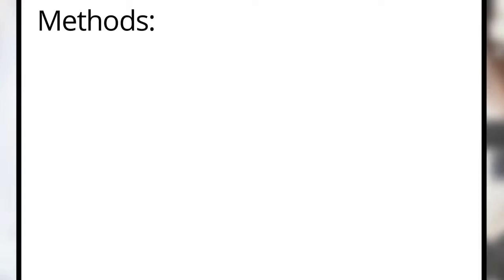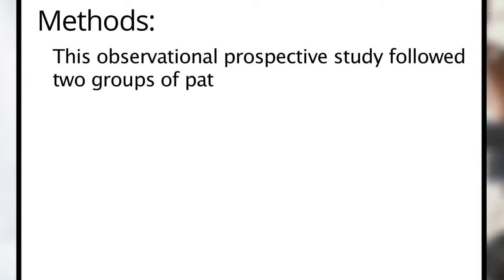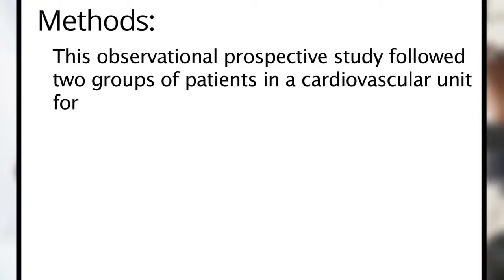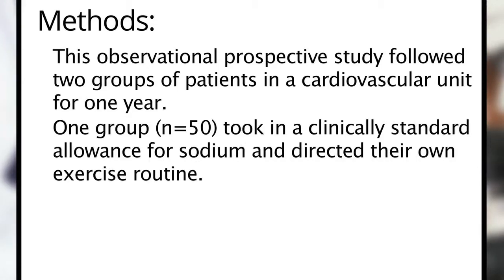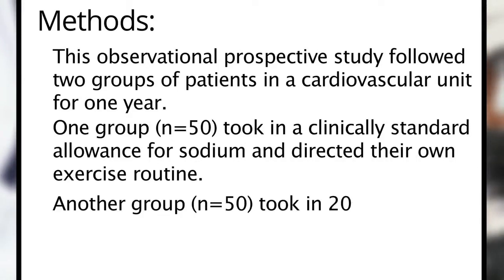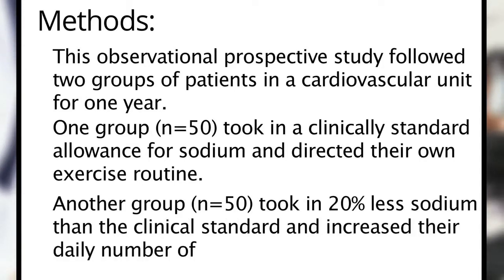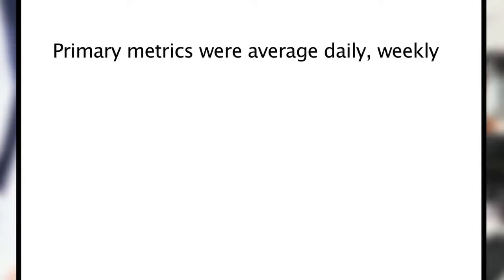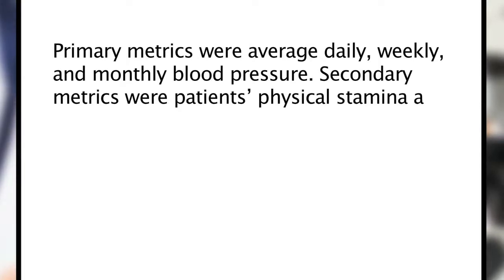Next, recall that the foundation of your methods section was the following. This observational prospective study followed two groups of patients in a cardiovascular unit for one year. One group took in a clinically standard allowance for sodium and directed their own exercise routine. Another group took in 20% less sodium than the clinical standard and increased their daily number of physical activities. Primary metrics were average daily, weekly, and monthly blood pressure. Secondary metrics were patients' physical stamina and range of motion.